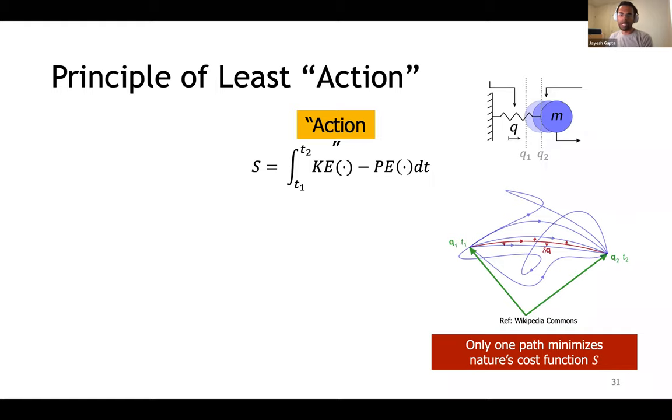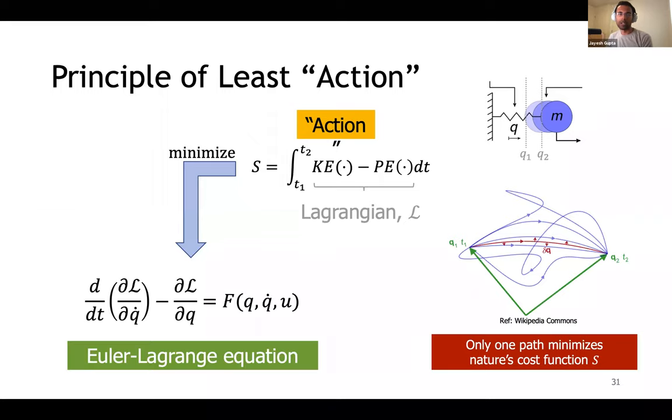One way to interpret this action is that nature is lazy, and this action is the cost function that nature minimizes. If we define the quantity given by the difference in kinetic energy and potential energy as a Lagrangian and try to minimize this action, we get what's called the Euler-Lagrange equation. This equation is just another description of the dynamics of the system, same as Newton's F equals MA. It's often easier to formalize more complex problems in terms of Euler-Lagrange equations than Newton's F equals MA.